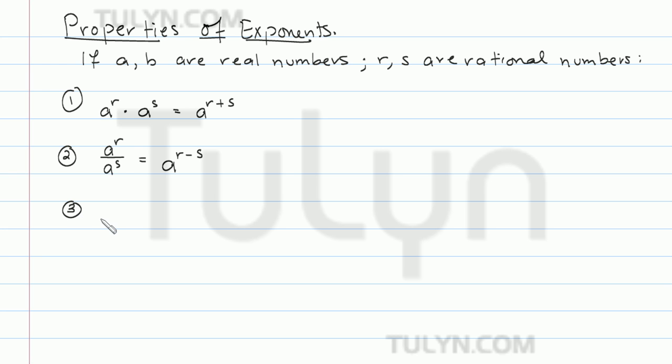The third property says that if you have two values A times B and you're taking that product to the R power, what you can do is distribute that R. So this becomes A to the R times B to the R. And similarly for division, if you have the quotient A over B to the R, you can do the same thing. So you can split up the exponents. This becomes A to the R over B to the R.